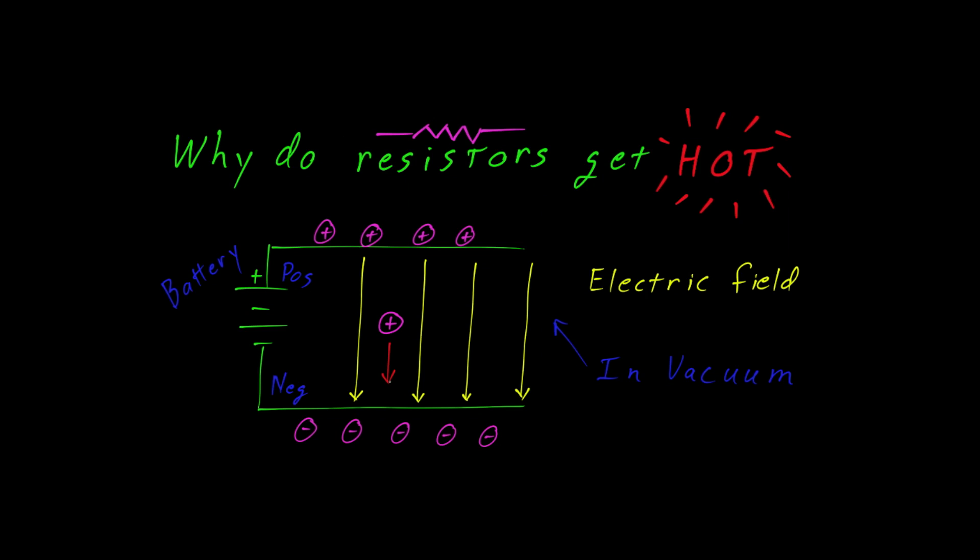We could replace our test charge with an electron, which changes the sign to negative. So now the electron will be accelerated upwards towards the positive plate.